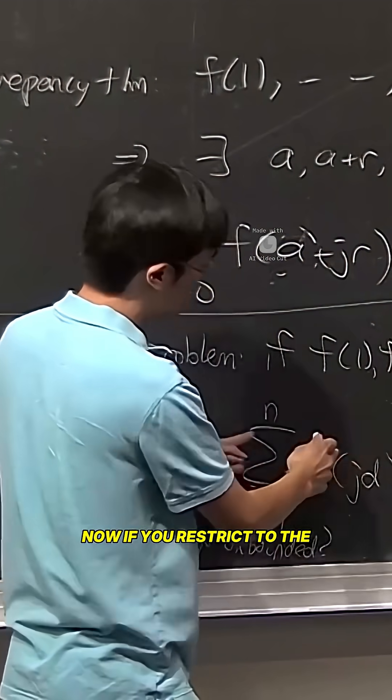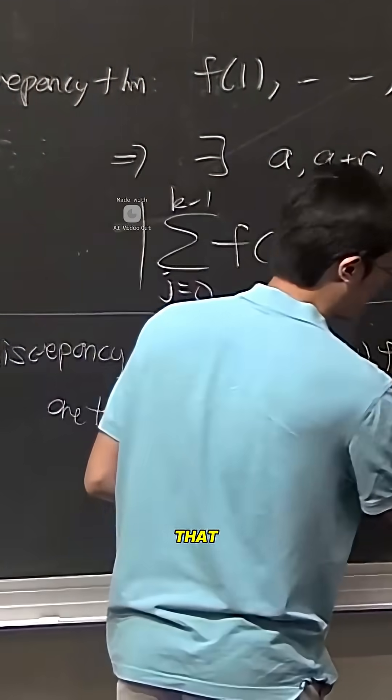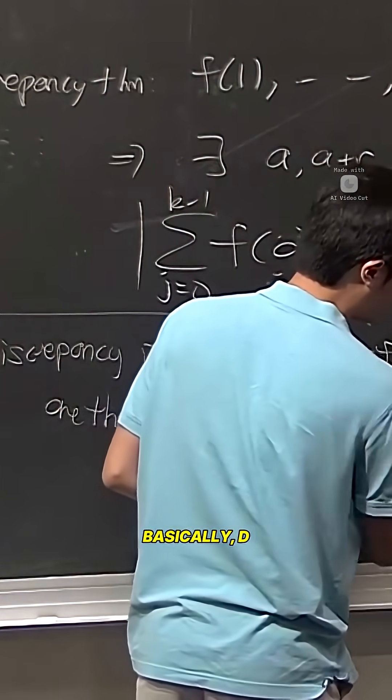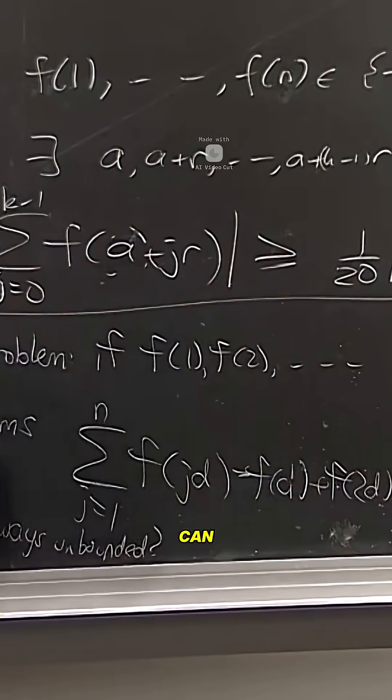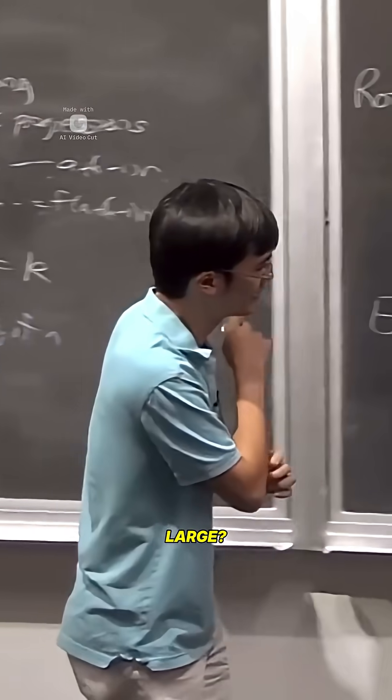But now if you restrict to the homogeneous arithmetic progressions, the ones that start at 0 basically—d, 2d, up to nd—can you make this sequence large?